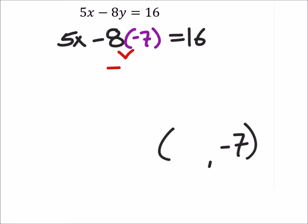8 times negative 7 is negative 56, so we got 5x minus negative 56 equals 16. And since we're subtracting a negative, we'll just make that a big plus sign right here. Now we'll subtract 56 from both sides, so we have the x's on their own side of the equal sign.